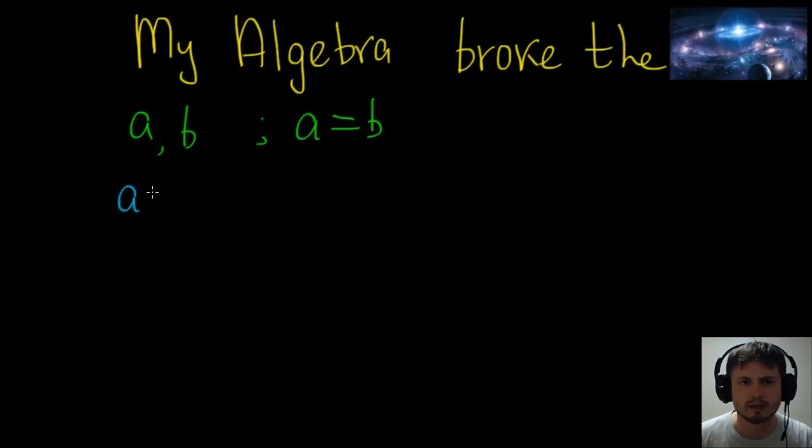And so if you actually multiply both sides by a, what are you going to get? If you multiply both sides by a, you're going to get a squared equals ab, right? So far so good. And I'll just call this step number one.